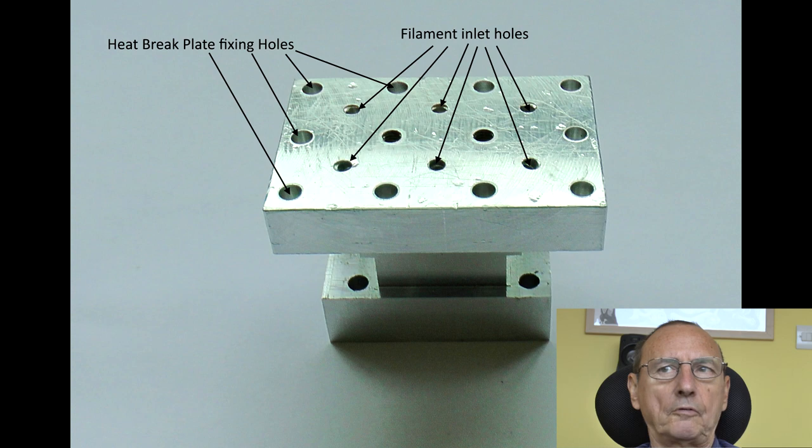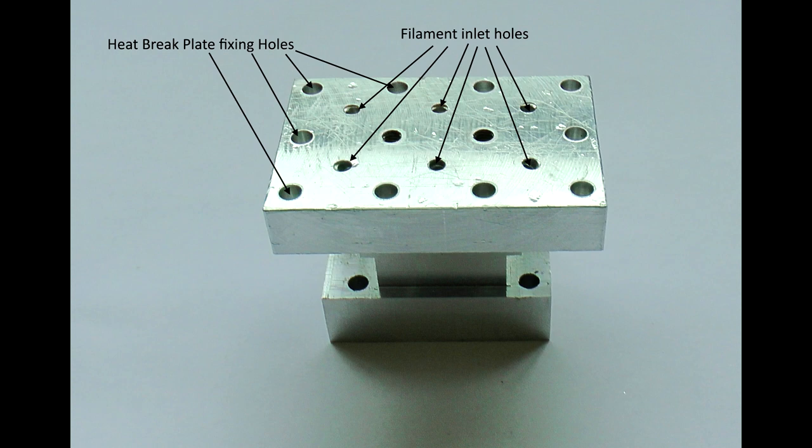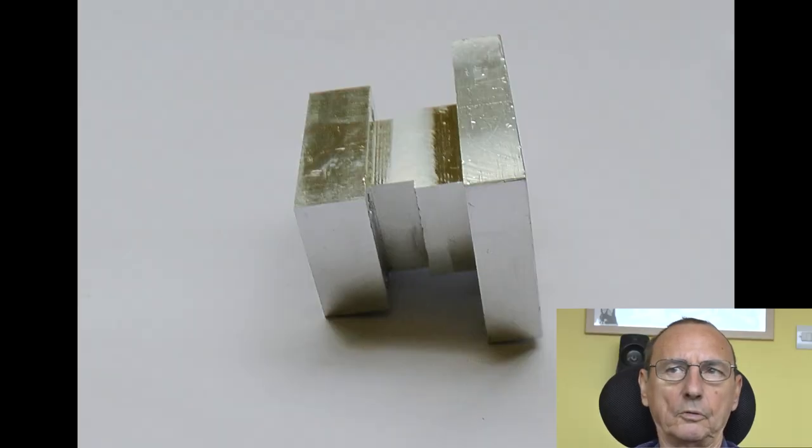Then there are two fittings on the top for the water inlet and outlet. The hotend itself consists of a combining block, which is this thing here. The six filament holes are at compound angles. That's the side view of the block.